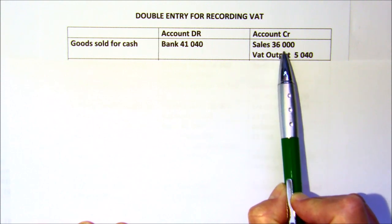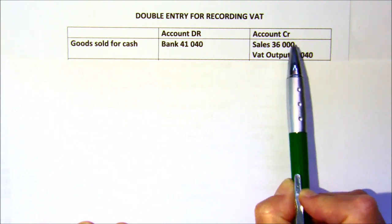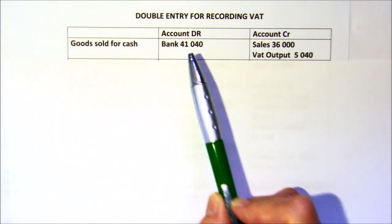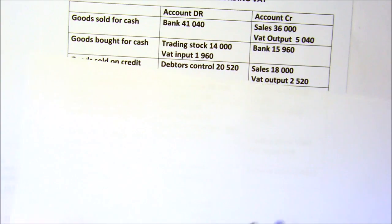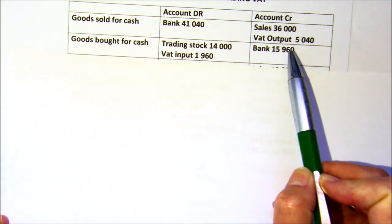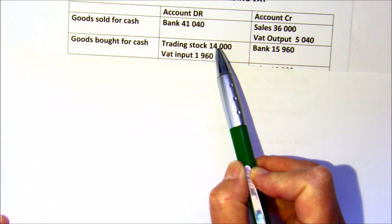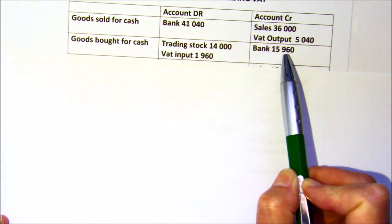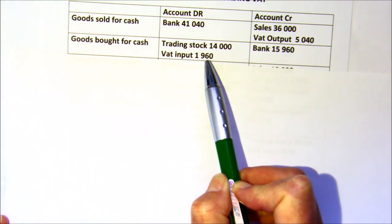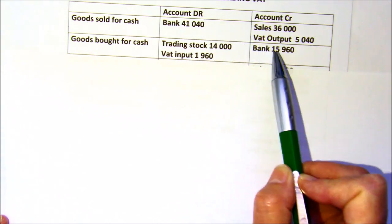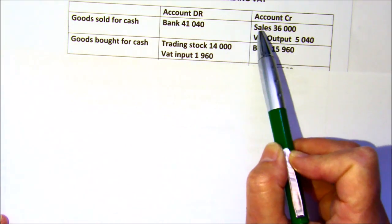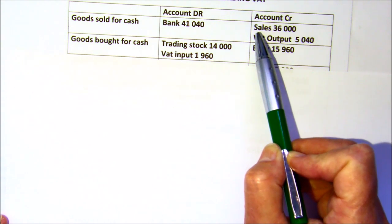The VAT you collect you'll pay over to SARS, so you won't keep it. It's the 36,000 that is your income, and that is what you calculate your profit on — not the full amount. Exactly the same applies when buying goods for cash: your bank goes out, you pay the full amount, some of it being trading stock at the exclusive amount, and the extra you've paid — which you will be claiming back — is your VAT input account. The bank amount is always the total; in your ledger accounts the VAT input and output are kept separately, and your accounts show the exclusive amount, because that's what you make profit on.